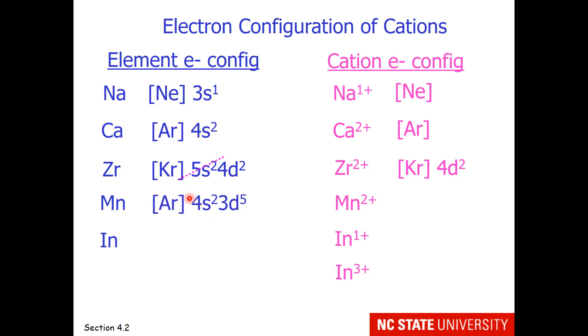Manganese has this electron configuration shown. And if we are going to make manganese 2 plus, which electron should we remove first? 4s or 3d? And I hope you say 4s. So the manganese 2 plus is argon 3d5.